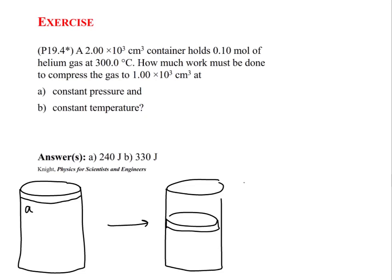In state A, we are at volume V sub A. We have a number of moles n, and we are at temperature T sub A. All of these are given in the problem. Now the cylinder compresses the gas.